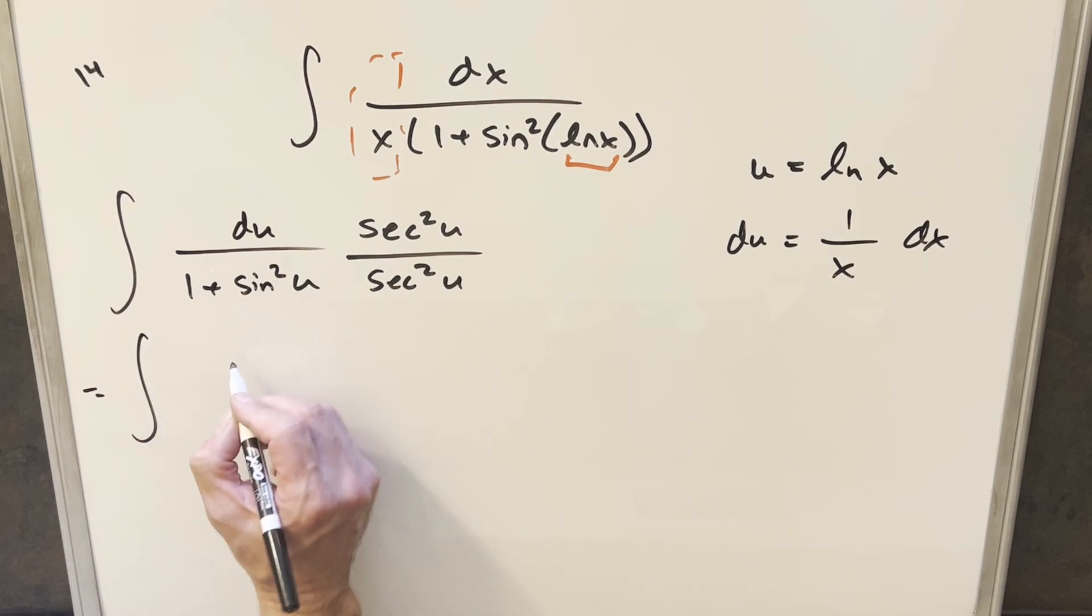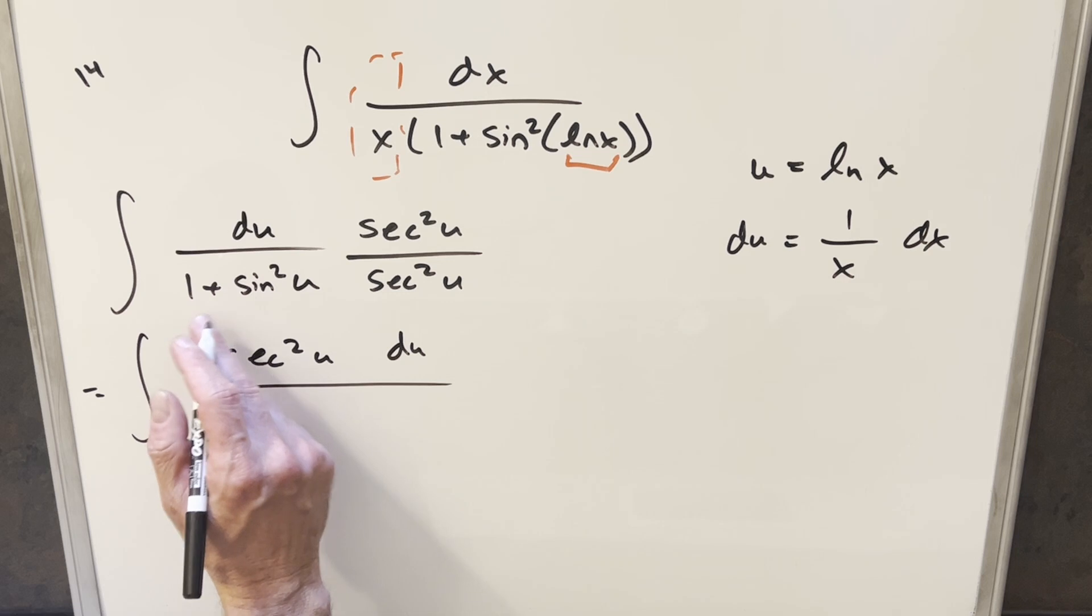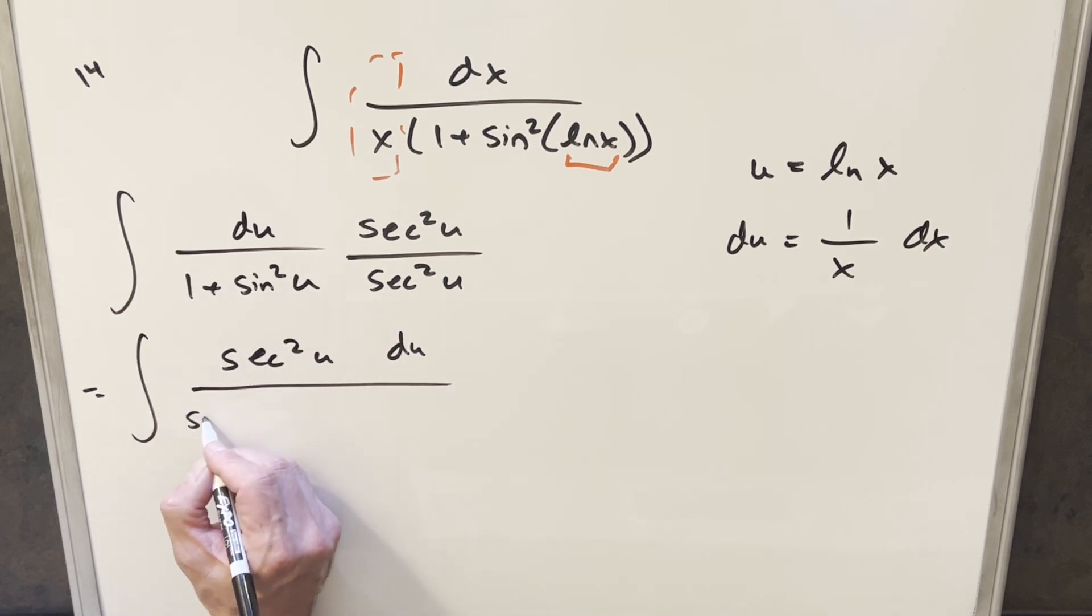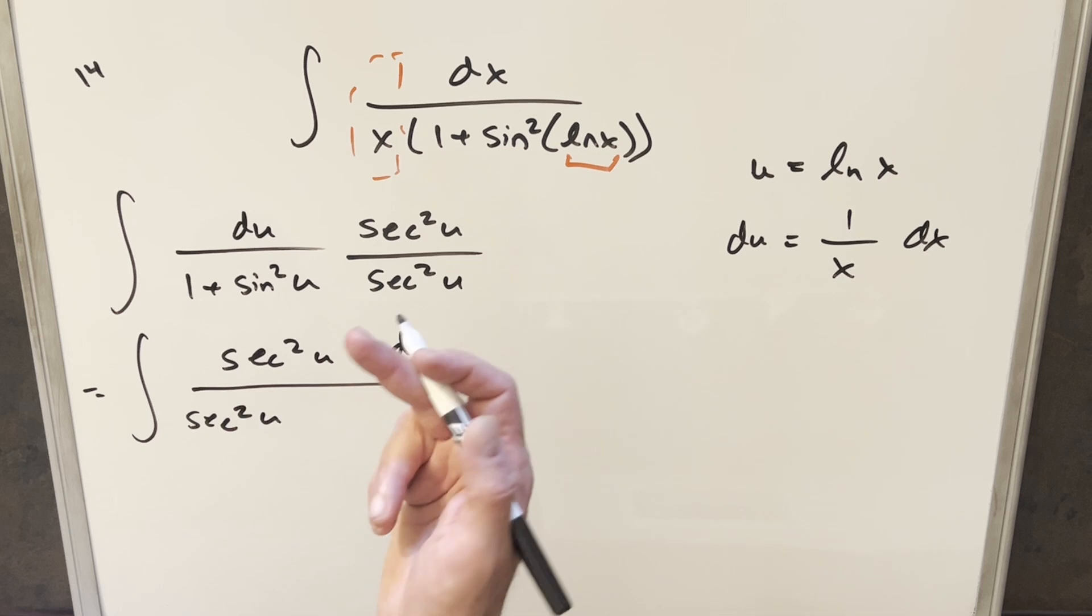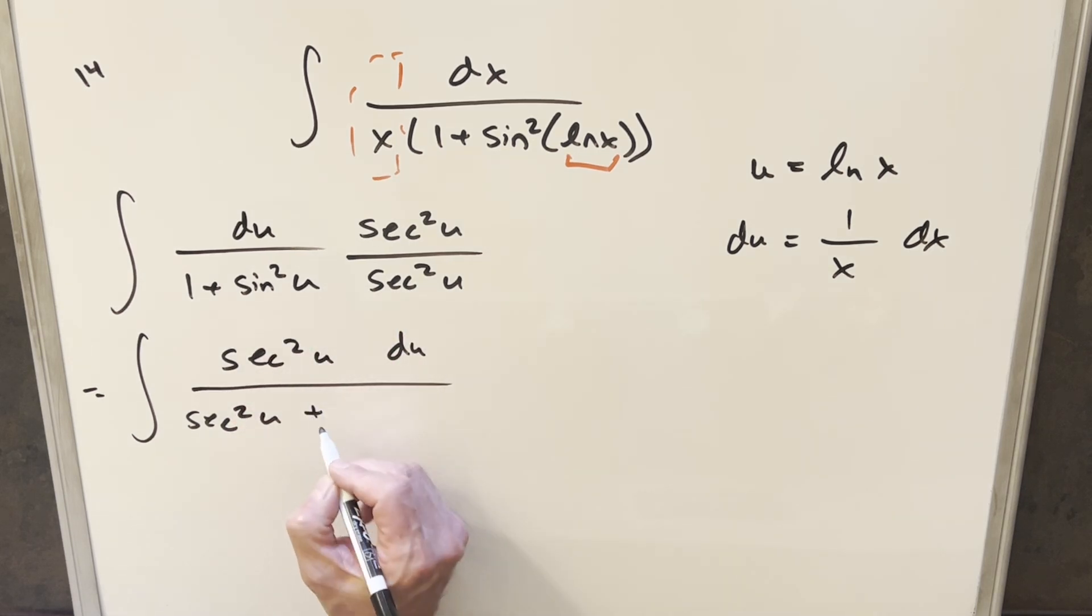So let's see how this works when we multiply it out. Our numerator is just going to become secant squared u du, then secant squared times 1 gives me another secant squared u here. And then for this secant squared, it's the same thing as 1 over cosine squared. You pair that up with sine squared, and this term is just going to become tan squared of u.